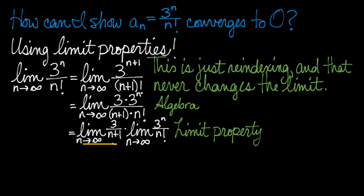This limit is a little bit easier. You can tell that as n grows very large, that limit is equal to 0. And this limit is a little bit mysterious. We know it exists, but we're not sure what it is yet.